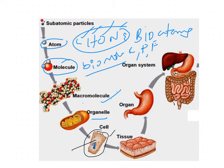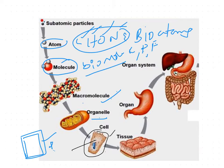For example, if you see the structure of the cell membrane, it is made up of proteins and lipids. That means the combination of these biomolecules forms macromolecules, which helps in the formation of cell organelles and also the formation of protoplasm. The protoplasm and cell organelles together are called a cell.